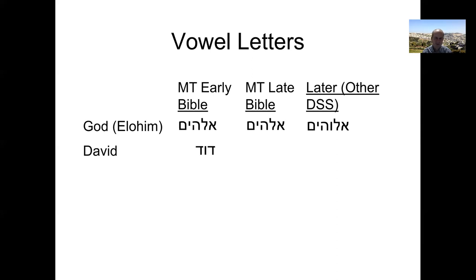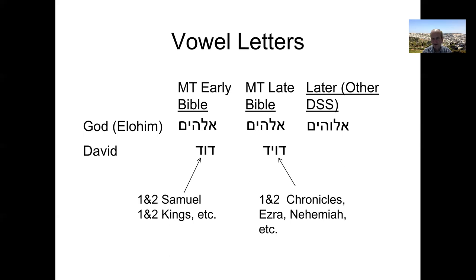Another example is the word David. In Hebrew it would be pronounced David, and those are three Hebrew letters: D, V, and D. That's the spelling in the earlier books of the Bible — 1st and 2nd Samuel, 1st and 2nd Kings, and so on. But in the later books, like 1st and 2nd Chronicles, Ezra, and Nehemiah, it's spelled with an extra letter — really the equivalent of D, V, Y, D. And of course later on in the Dead Sea Scroll time period, it's spelled that same way too.